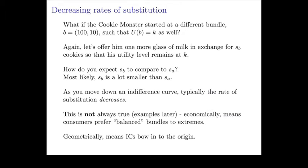This is not always going to be true, but economically it means that consumers prefer balanced bundles — they prefer mixtures of the goods rather than extreme bundles. What it really means is that the indifference curves are bowed towards the origin. If we draw this picture with good one and good two on the axes, the indifference curves are bowed towards the origin — steeper on one end and flatter on the other.